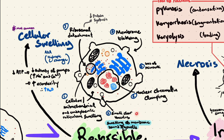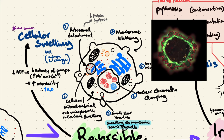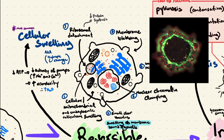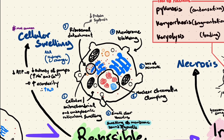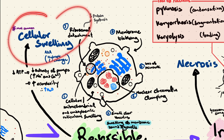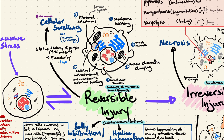Swelling of the endoplasmic reticulum leads to ribosomal detachment and therefore reduced protein synthesis. We can also observe small vacuoles of water within the cytoplasm, as well as chromatin clumping within the nucleus. At the cell membrane, we observe blebbing — and yes, blebbing is a scientific word. If the cell had microvilli to increase surface area, these microvilli will be lost, reducing surface area. All in all, cellular swelling is not a good thing, but it's still reversible as long as we remove the stress.